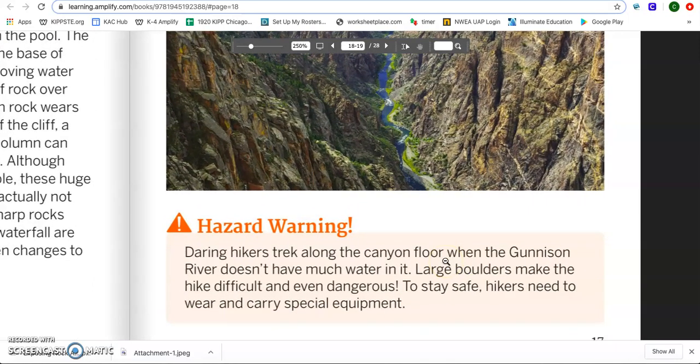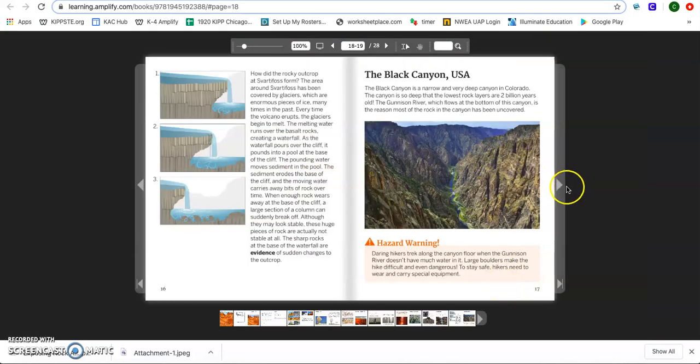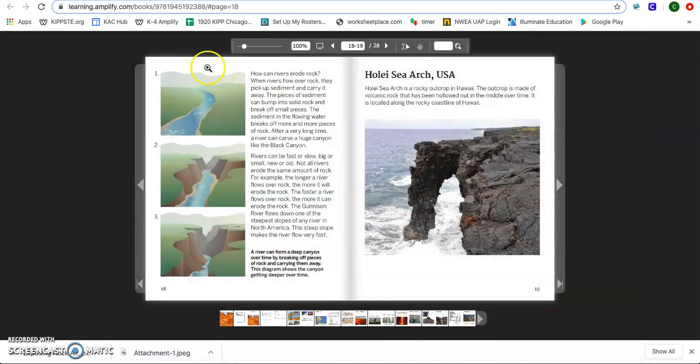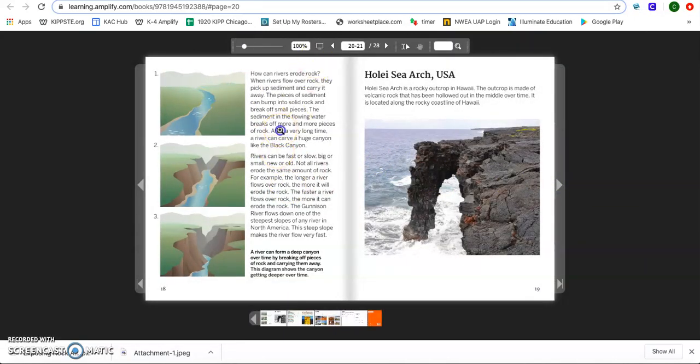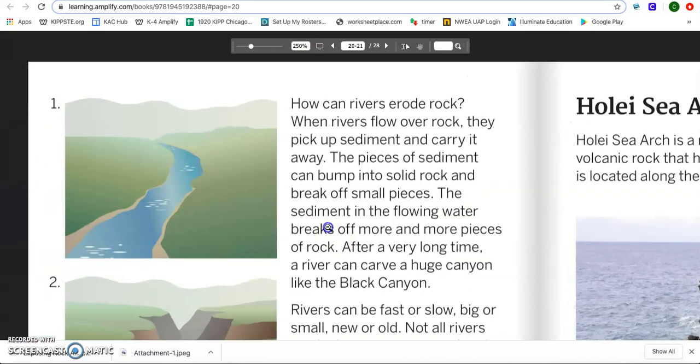At the bottom, they give us a little hazard warning. We'll go ahead and read that as well. Daring hikers trek along the canyon floor when the Gunnison River doesn't have much water in it. Large boulders make the hike difficult and even dangerous. To stay safe, hikers need to wear and carry special equipment. I wouldn't know anything about hiking, you guys. I am not that brave. Let's go ahead and flip the page.